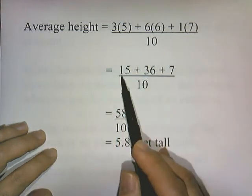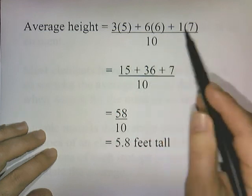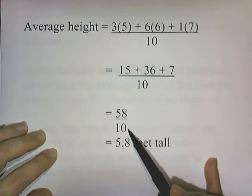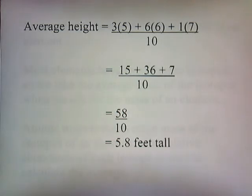So three times five is fifteen, six times six is thirty-six, one times seven is seven. Add all these up, you get fifty-eight. Fifty-eight divided by ten is 5.8. So when you take the average of something, you just add up all the values and divide it by the total number of values that you have.